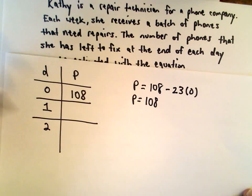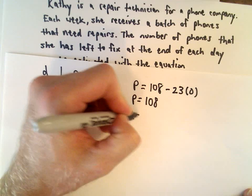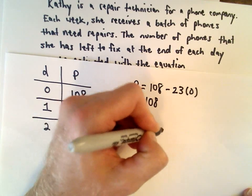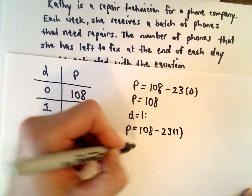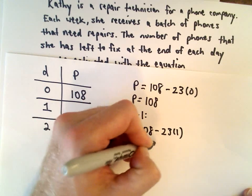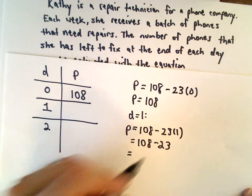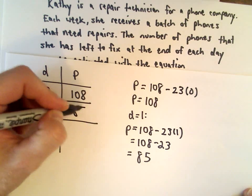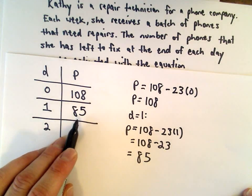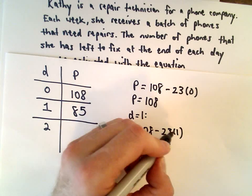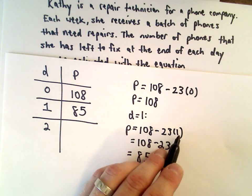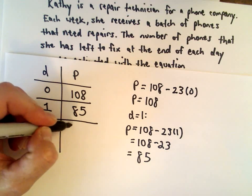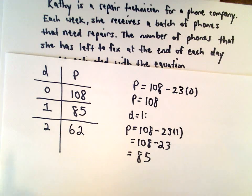You could always plug in a couple other values. Let's say d equals 1. Well, then we would have P equals 108 minus 23 multiplied by 1. That's going to be 108 minus 23, which is 85. So, if she works one day, there's 85 phones left to fix. If she works two days, we would just substitute in 23 multiplied by 2. She would take off another 23 phones, so that would leave her with 62 phones left to fix.